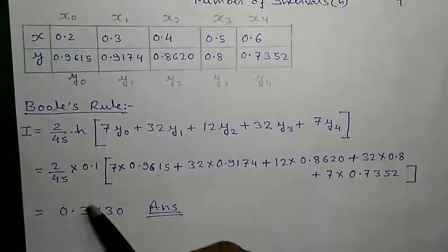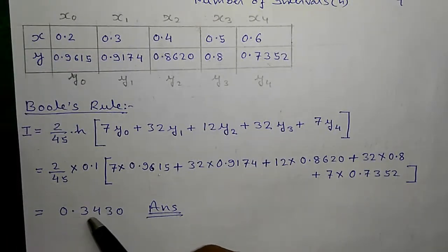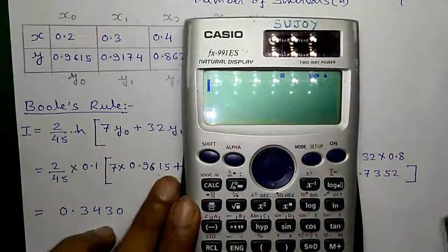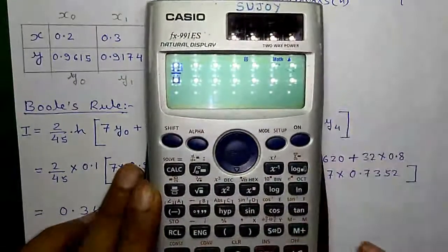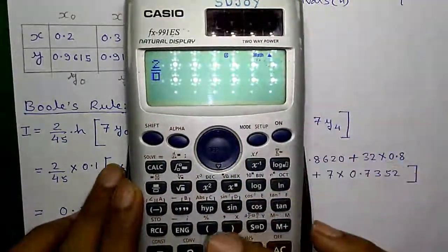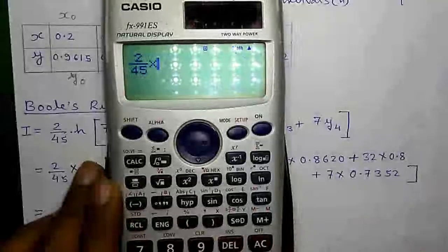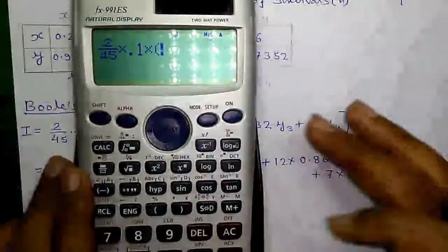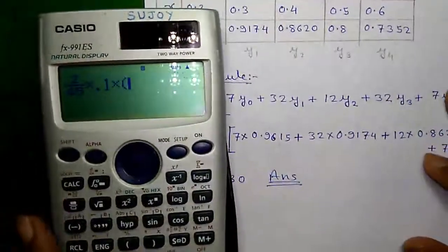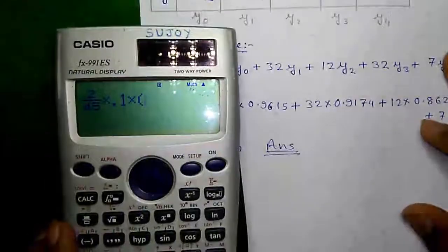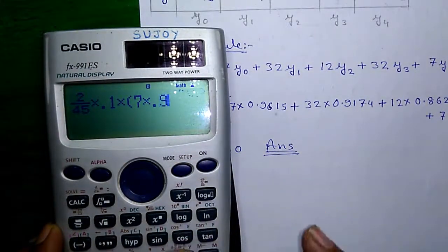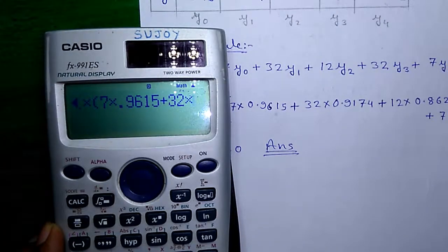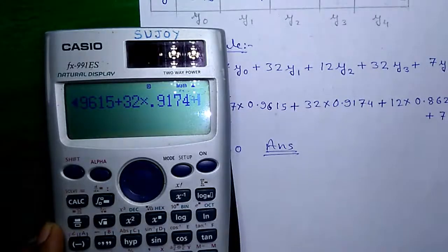Now, if you do the calculation, I will show you how to do it directly on this calculator with the fraction button: 2 by 45 into h, that is 0.1, into inside the bracket enter the whole expression 7 into 0.9615 plus 32 into 0.9174 plus